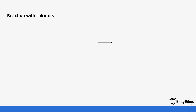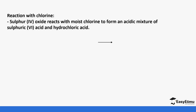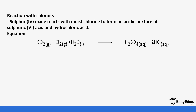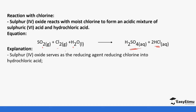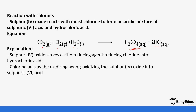Sulfur dioxide reacts with chlorine to form a mixture of sulfuric acid (H₂SO₄) and hydrochloric acid (HCl). From the equation, sulfur dioxide reacts with water to form sulfurous acid, which is oxidized to form sulfuric acid, and then chlorine reacts with the remaining hydrogen ions to form hydrochloric acid. Sulfur dioxide acts as a reducing agent because it reduces chlorine to hydrochloric acid, while chlorine acts as an oxidizing agent because it oxidizes sulfur dioxide into sulfuric acid.